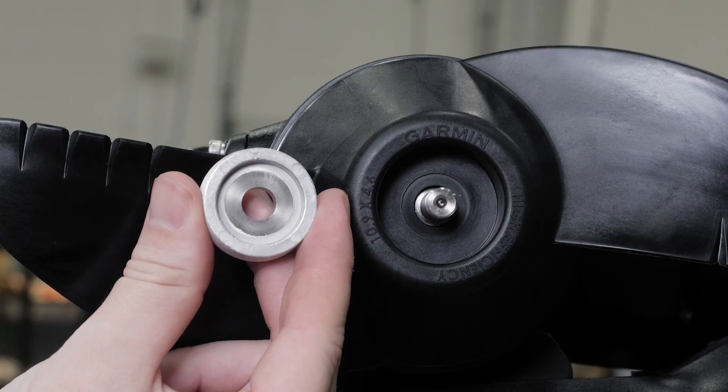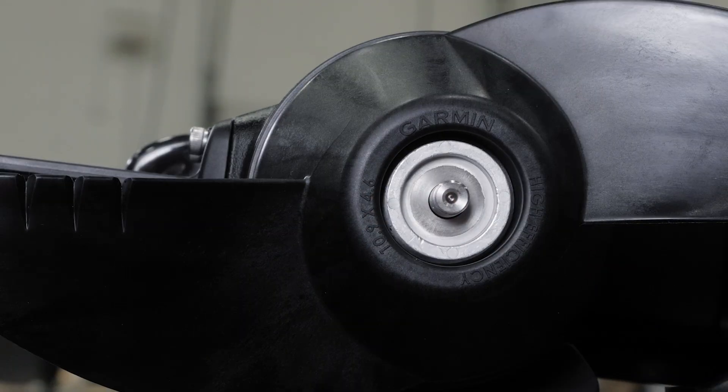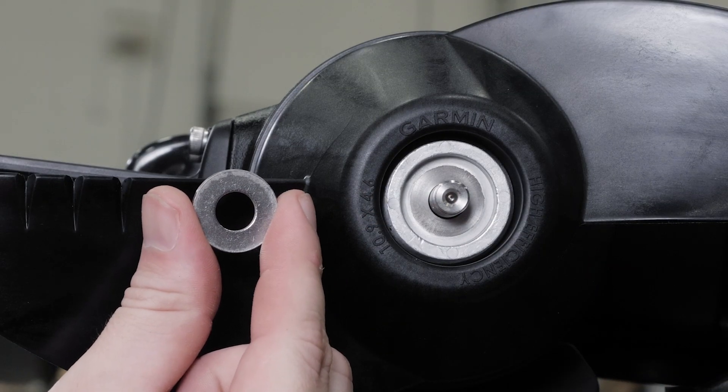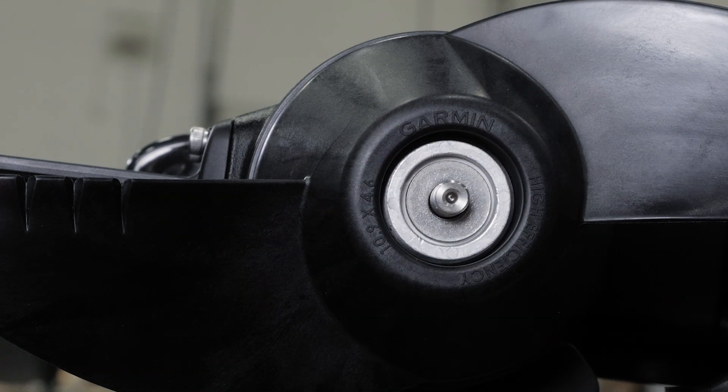Now place the anode, washer, and lock washer onto the end of the motor shaft.